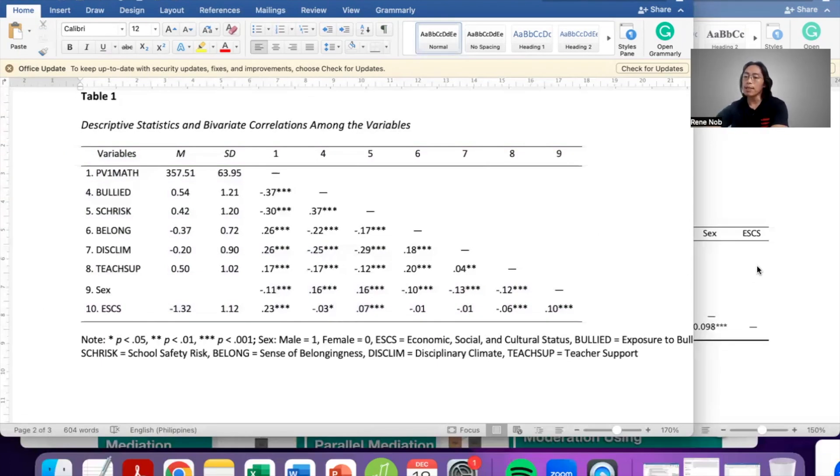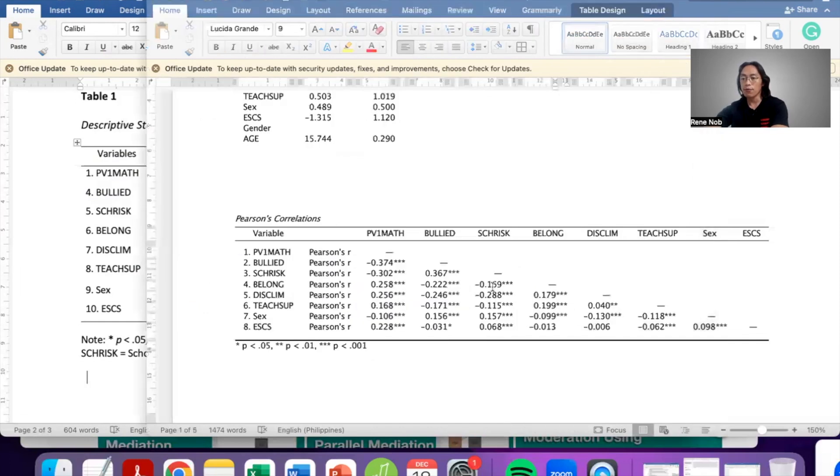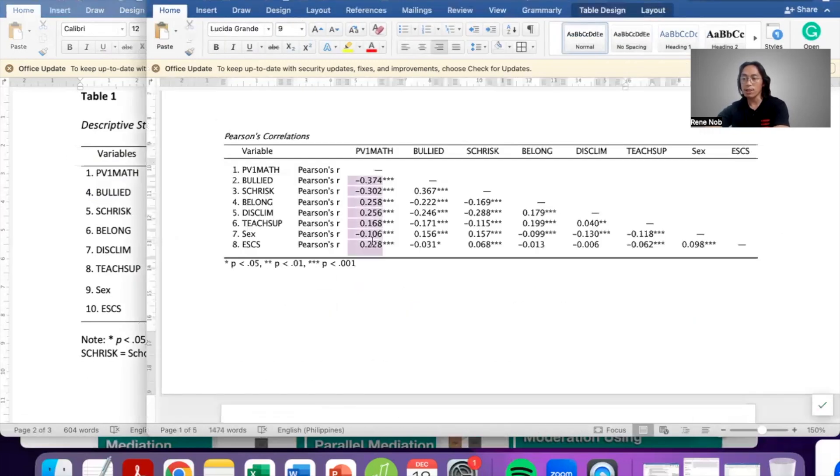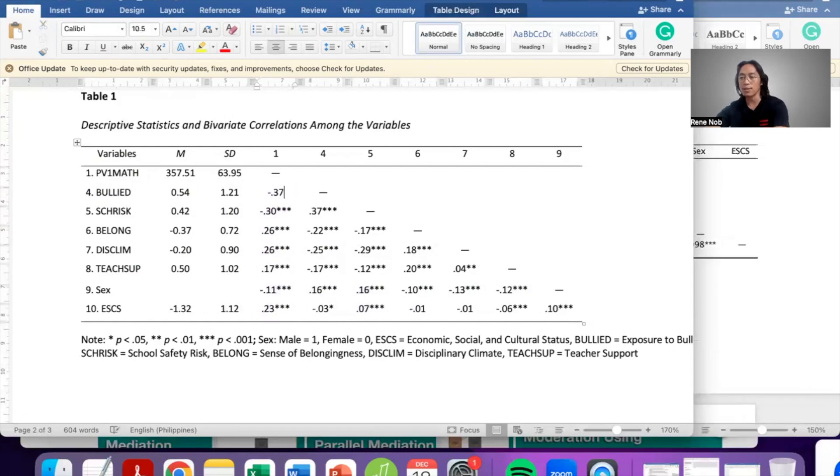I basically copied the mean and standard deviation values from this table and copied it here. Then I copied the correlation coefficients from here to here, and then I manually added the asterisks. Another thing that you should remember is that the values must be uniform. According to APA, it's either three or two decimal places, but whatever it is, be consistent. So I have decided that all of the values be two decimal places, so I've rounded these values.